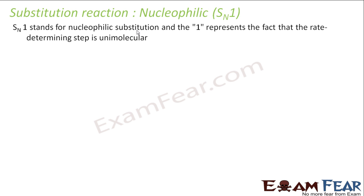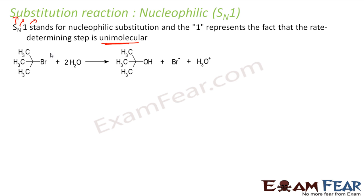S stands for substitution, N stands for nucleophilic, and 1 represents unimolecular — meaning the rate-determining step is unimolecular. In this case, only one species determines the reaction rate.